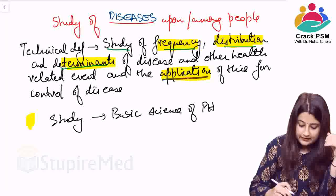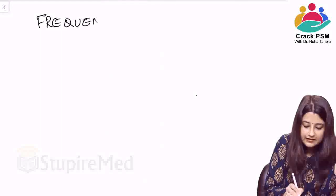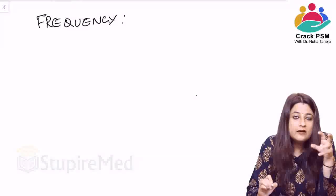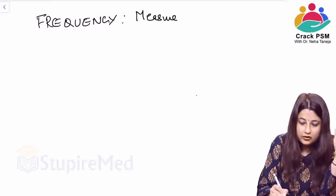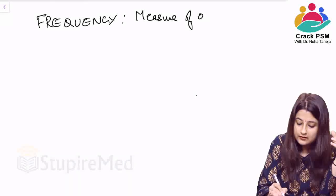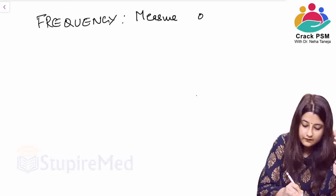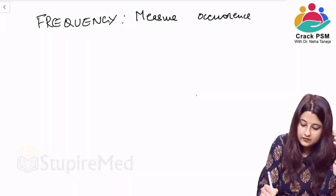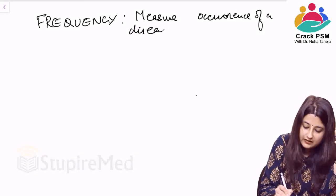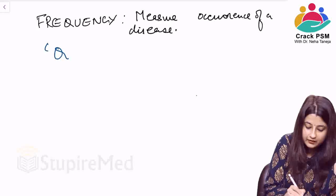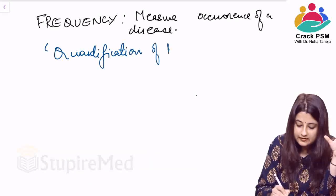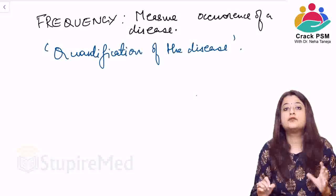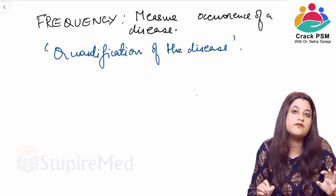Now the next important part is the study of frequency. What do we understand by study of frequency? It means you have to measure the occurrence of a disease — you will quantify the occurrence of disease. How much of the disease is occurring? That is the meaning of measure of disease frequency.